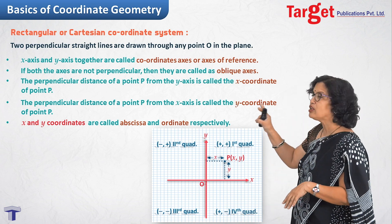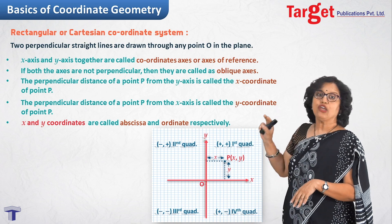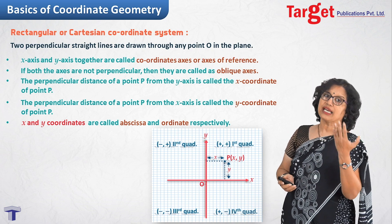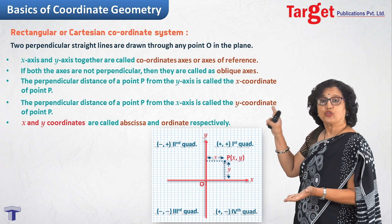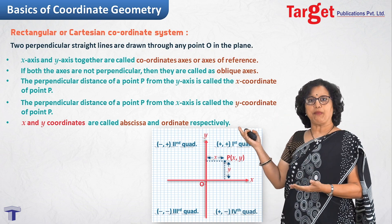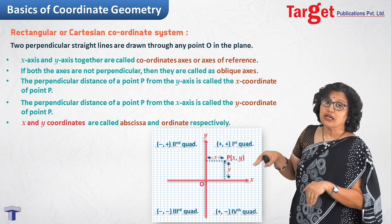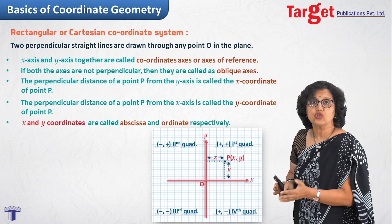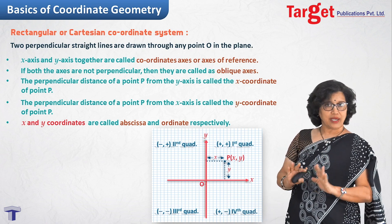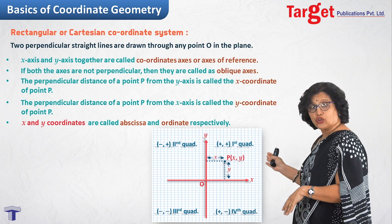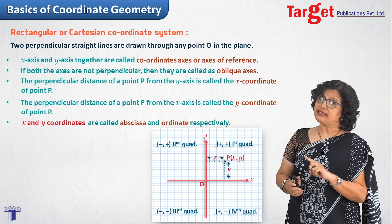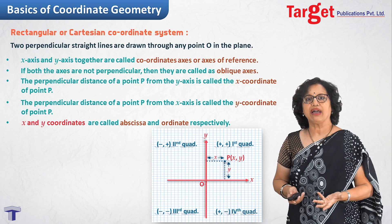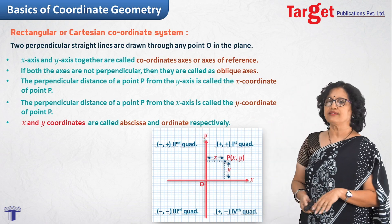Keeping this in mind: in the first quadrant, both X and Y coordinates are positive. In the second quadrant, X is negative but Y is positive since you are above the X axis. In the third quadrant, both X and Y are negative. In the fourth quadrant, X is positive and Y is negative.